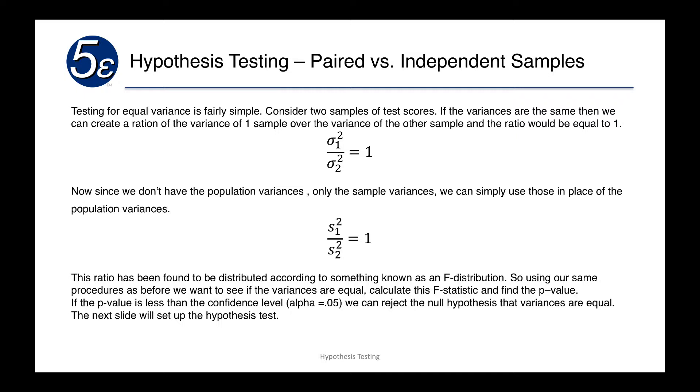And we're going to find the p-value. And if the p-value is less than the confidence level, we're going to reject the null hypothesis that the variances are equal. So our null hypothesis is set up that the variances are equal.